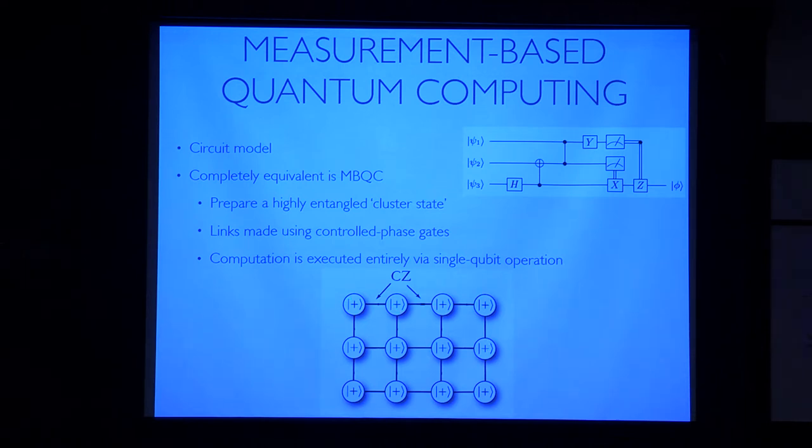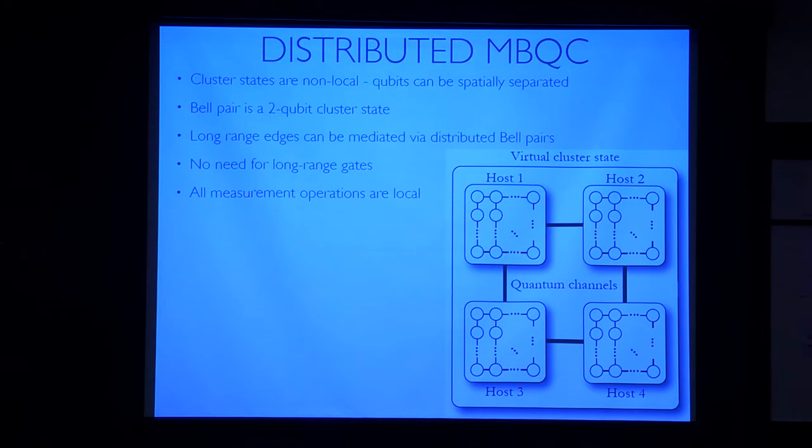The vertices represent single qubits and the edges represent the application of controlled phase gates, which are maximally entangling gates. And the idea is that you can prepare this cluster state, and once you've prepared it, all you need to do is single qubit measurements in a particular order with particular choice of measurement bases, and that will define the algorithm. So you prepare this universal substrate state, and then using single qubit measurements in a particular well-defined basis, you can implement any algorithm you want.